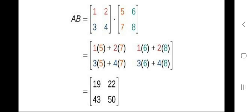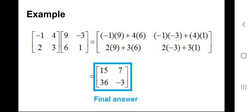Here you can also see that we took two 2×2 matrices — matrix A and B each having two columns and two rows — and the resultant matrix is also 2×2. Here is another example: matrices [−1, 4; 2, 3] and [9, −3; 6, 1] are to be multiplied.